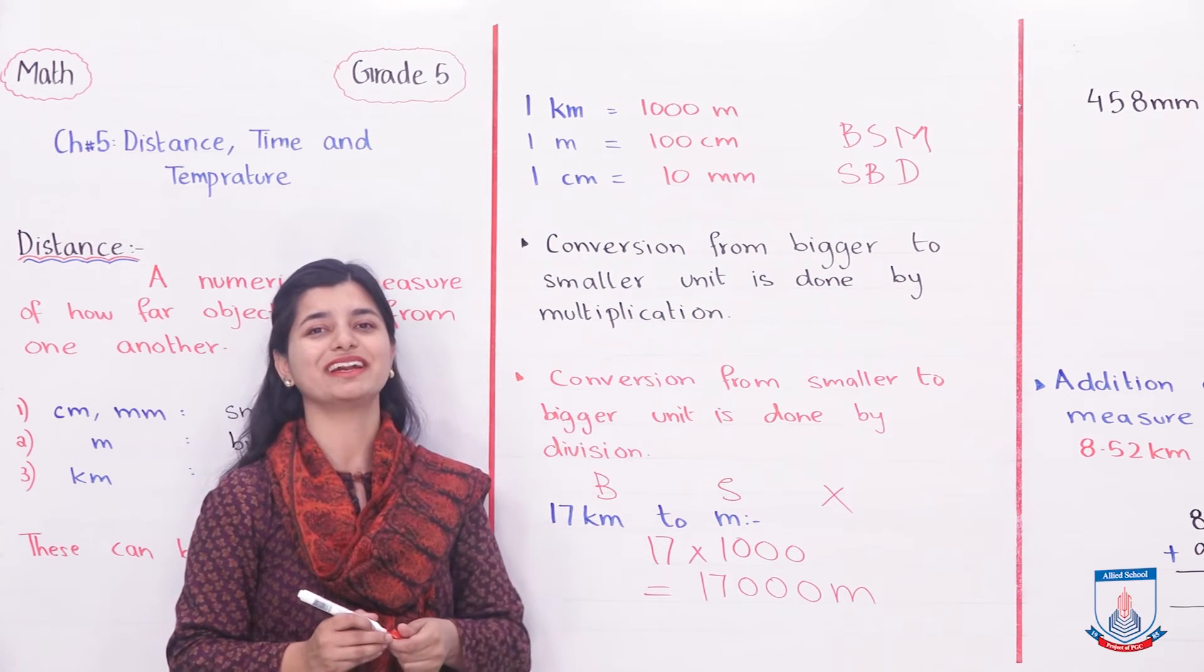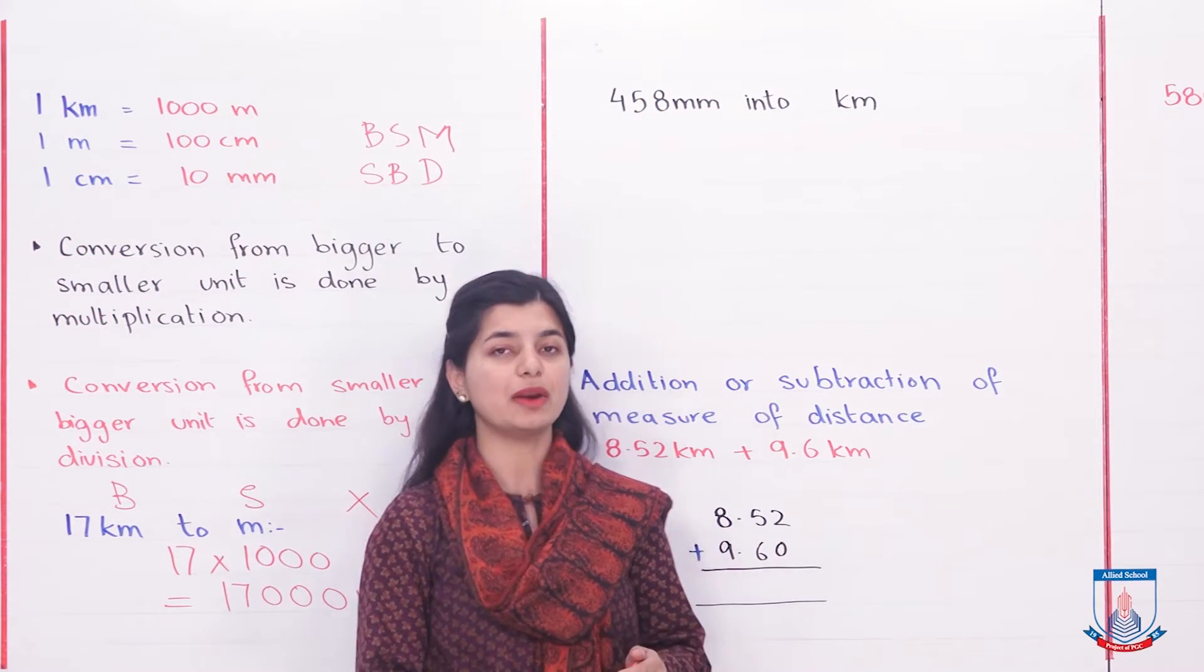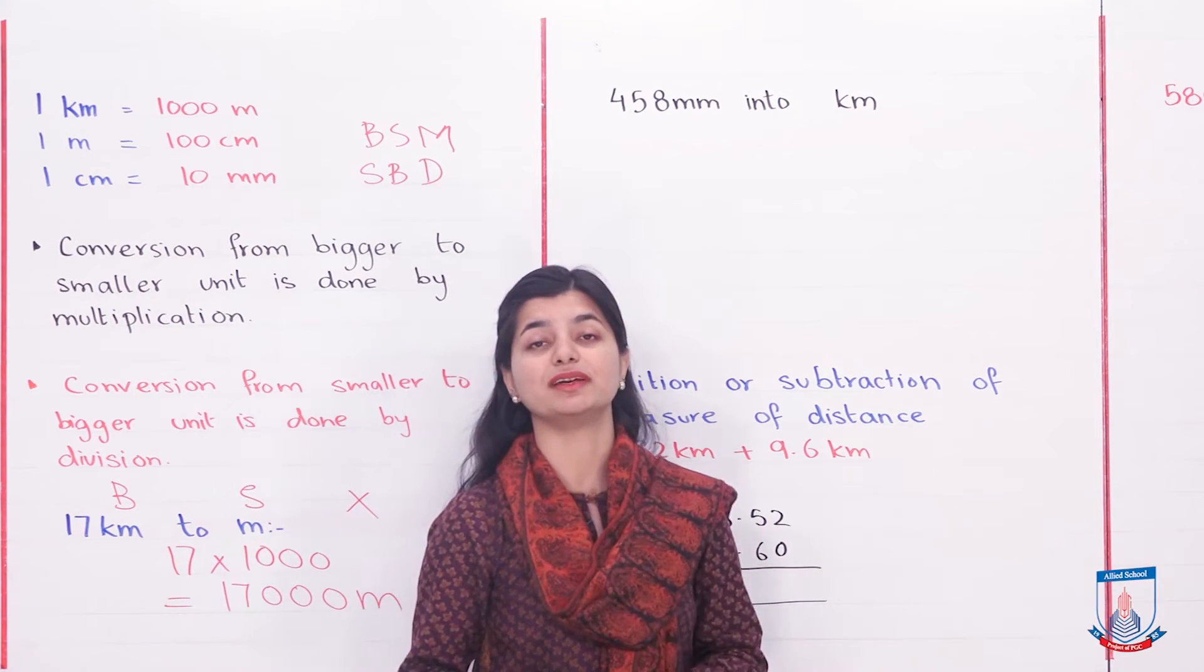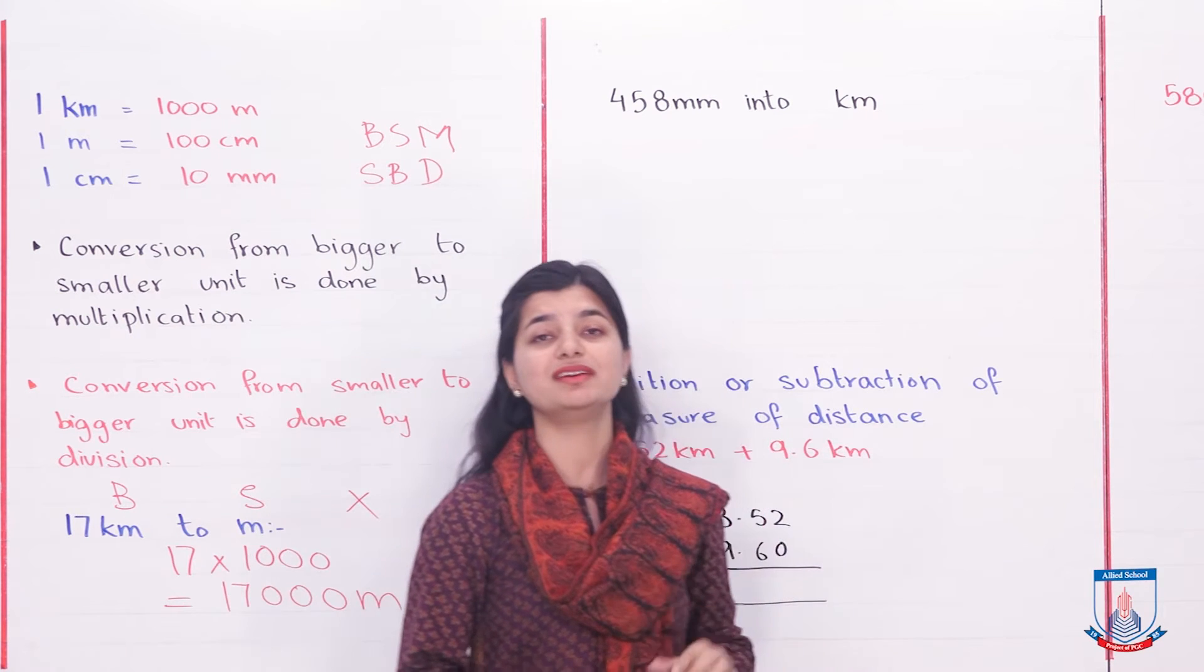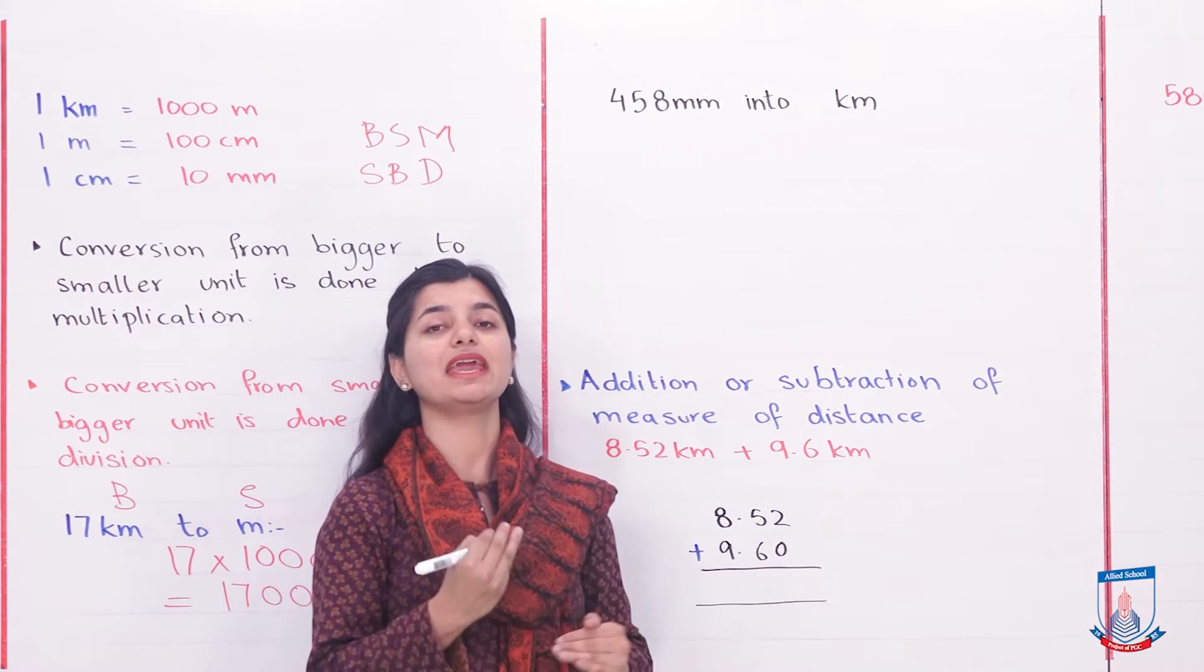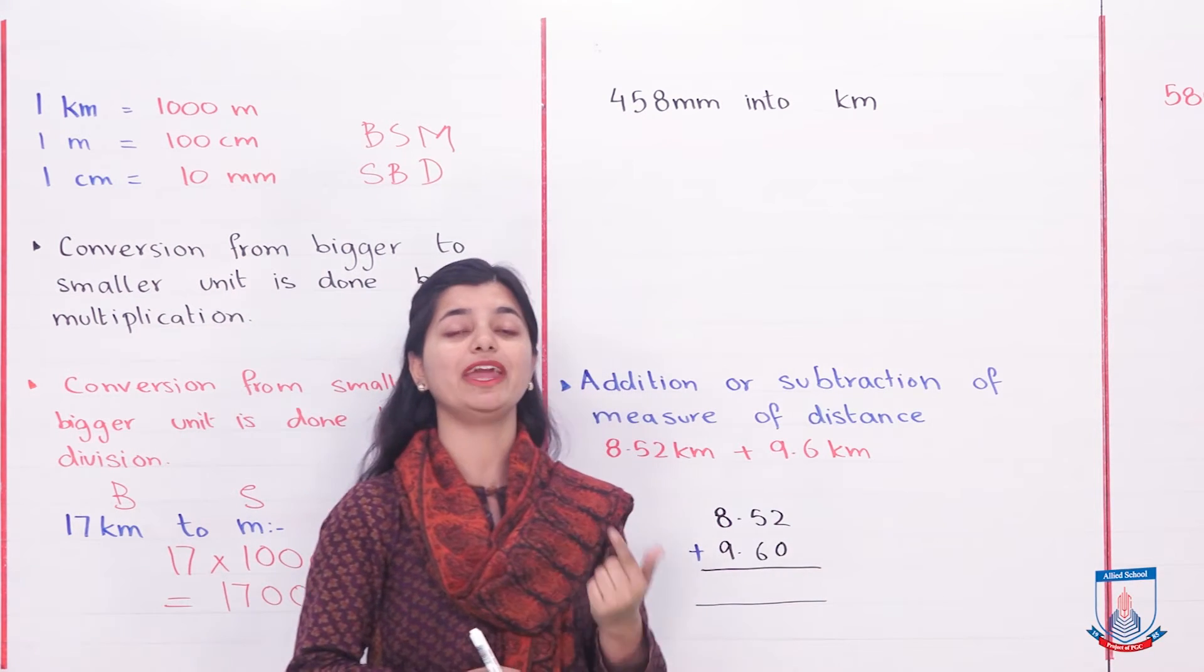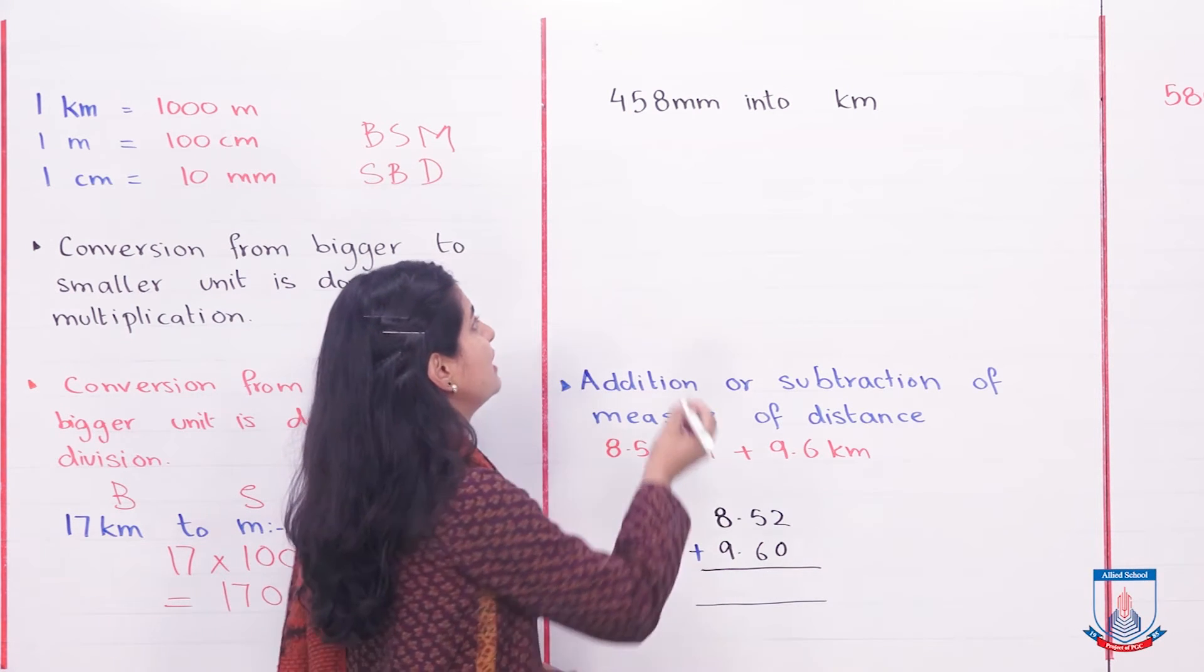Let's look at another example. Another example we have here is 458 millimeters into kilometers. Now the difference is that you are going from millimeters to kilometers, not meters. Small to big is to divide, but we have to make the conversion in steps. First, we go from millimeters to centimeters. In 1 centimeter, how many millimeters are there? 10. So first, we divide by 10.